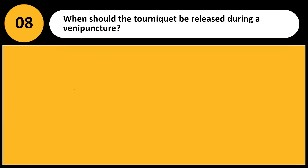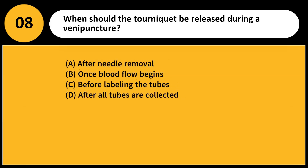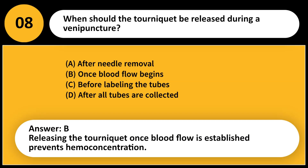When should the tourniquet be released during a venipuncture? A. After needle removal. B. Once blood flow begins. C. Before labeling the tubes. D. After all tubes are collected. Answer: B. Releasing the tourniquet once blood flow is established prevents hemoconcentration.